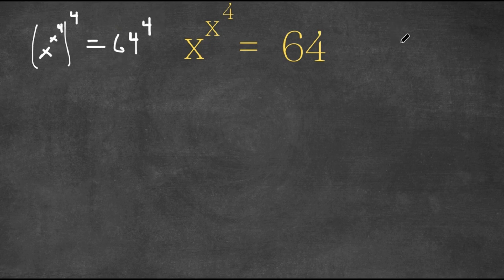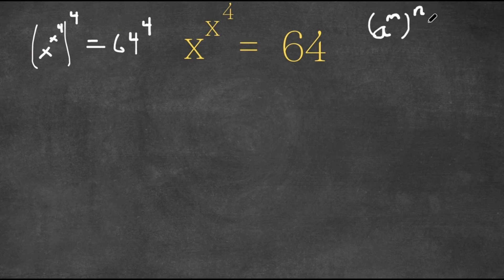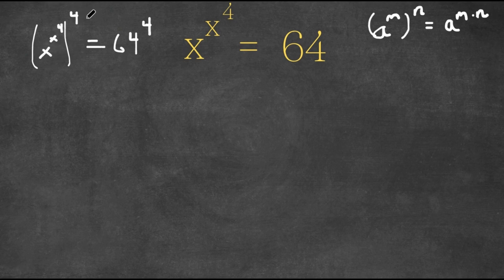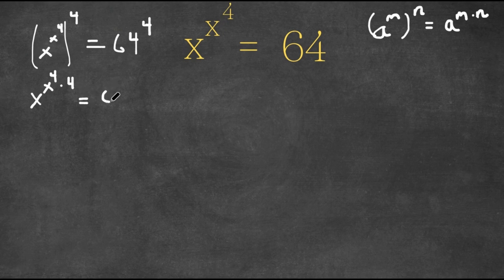Remember, a property of exponents is that if we have something a to the power of m to the power of n, this can also be written as a to the power of m times n. So x to the power of x to the power of 4, to the power of 4, can be written as x to the power of x to the power of 4 times 4, and this equals 64 to the power of 4.